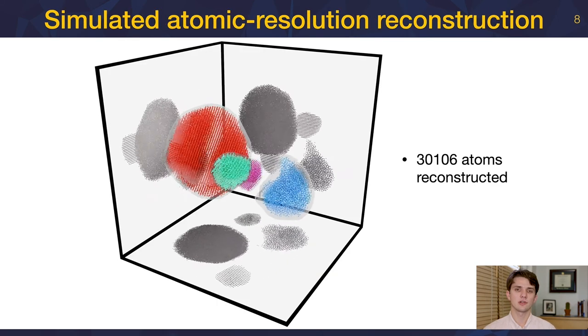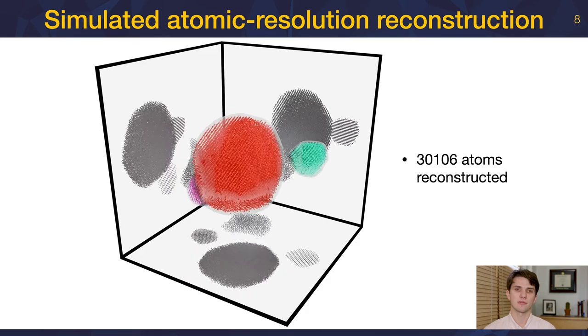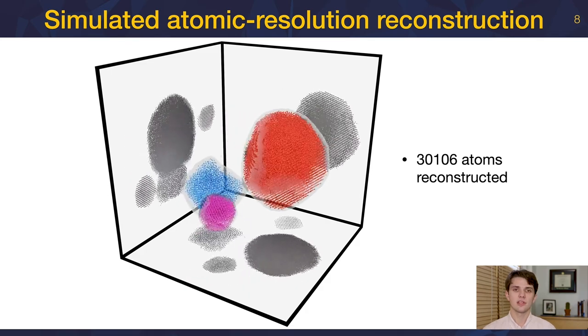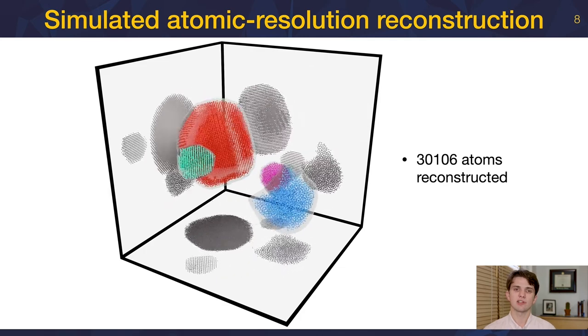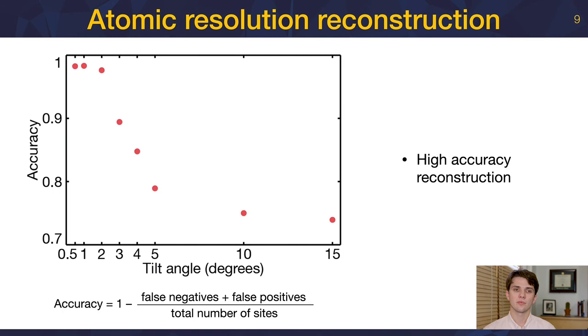Here is the final atomic resolution aberration-corrected electron tomography reconstruction. This shows that we can measure atomic coordinates over extended objects. There is no sampling limit for aberration-corrected tomography. These reconstructions are highly accurate. This is a plot showing the accuracy of the identification of atomic coordinates as a function of the tomography tilt angle. This takes into account both false negatives and false positives. We see here that at low tilt angles, our reconstruction is nearly perfect. With tilt steps smaller than 2 degrees, we reconstruct more than 97% of the atomic coordinates.